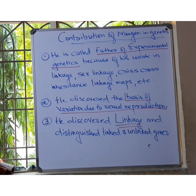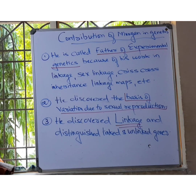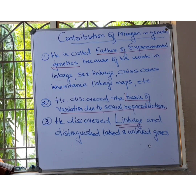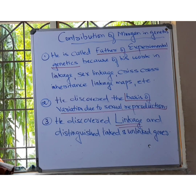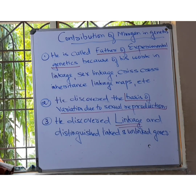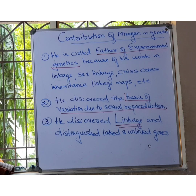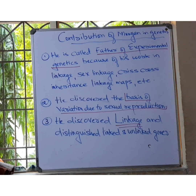Morgan discovered linkage and distinguished linked and unlinked genes. Linkage is Morgan's biggest contribution in genetics. On the basis of this theory, Morgan distinguished two types of genes: linked genes and unlinked genes. The linkage concept in detail we will study in the future.